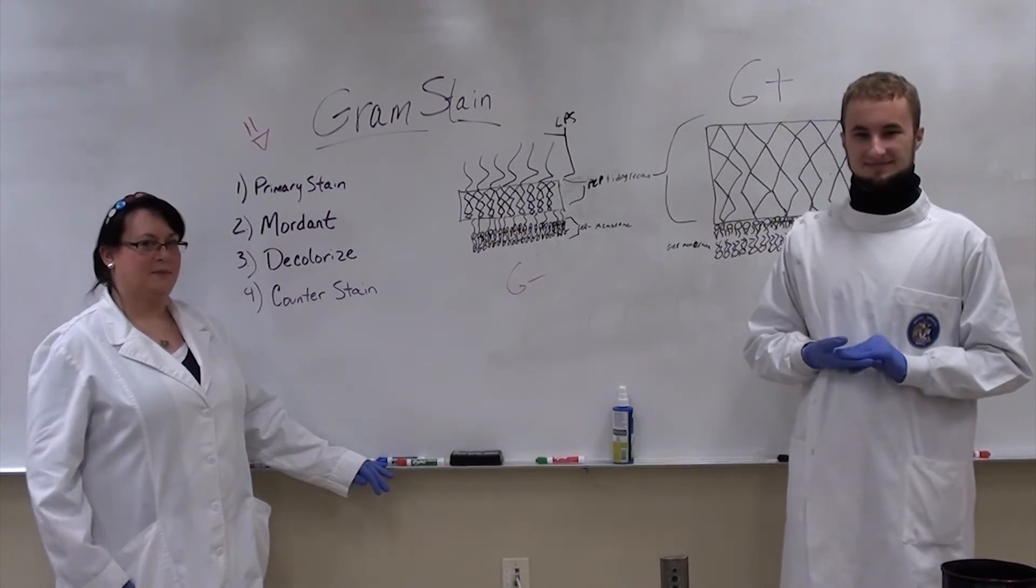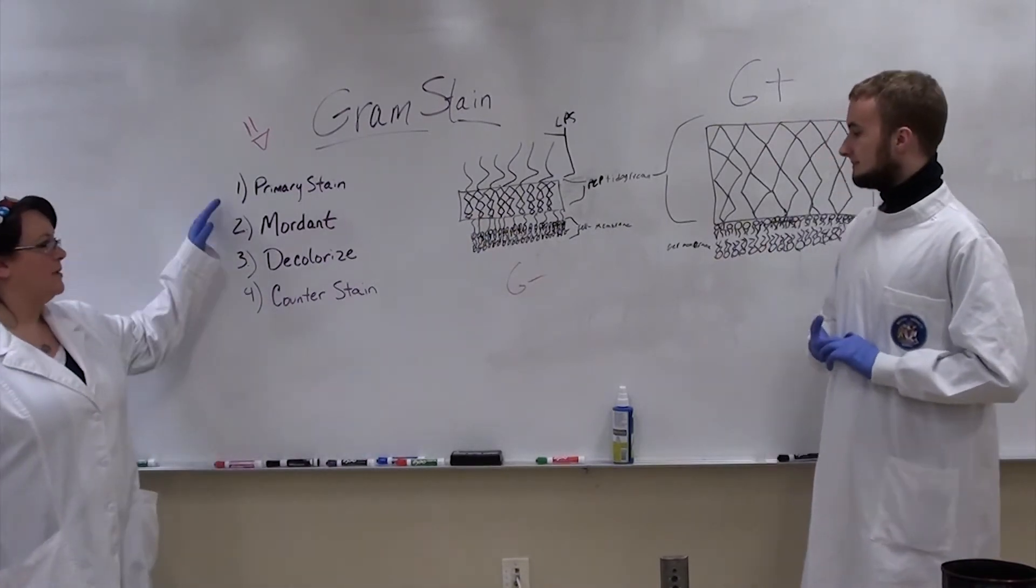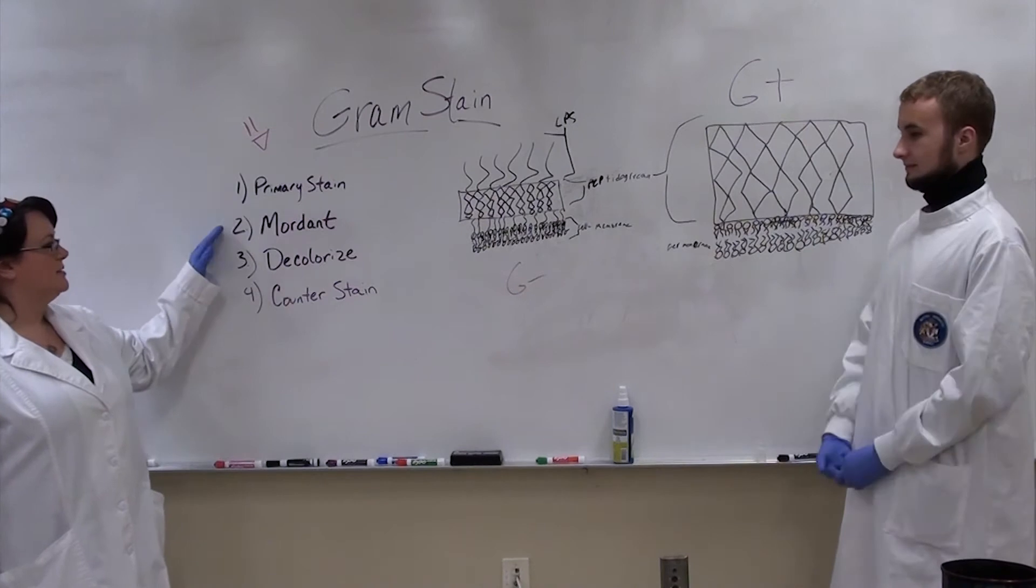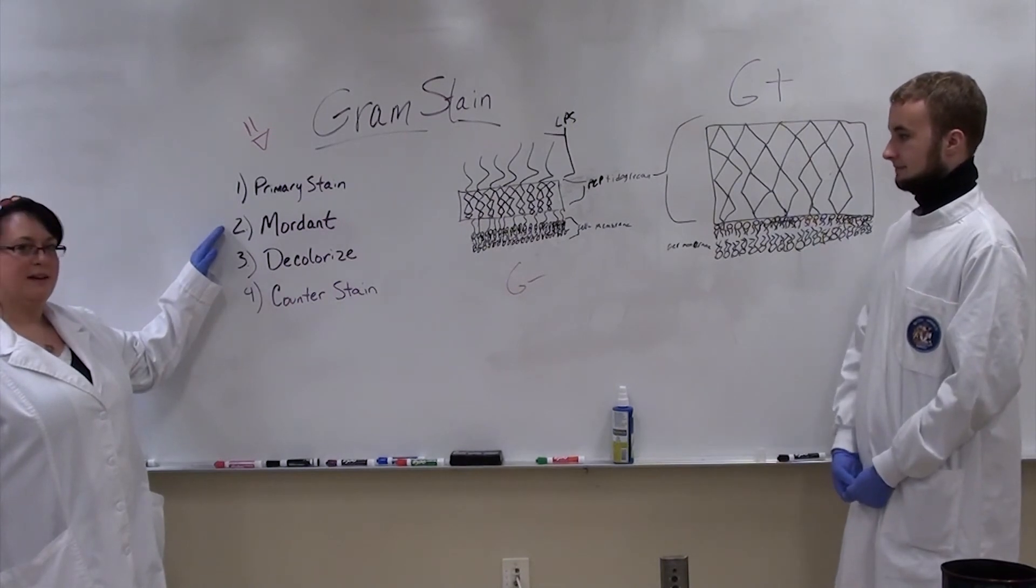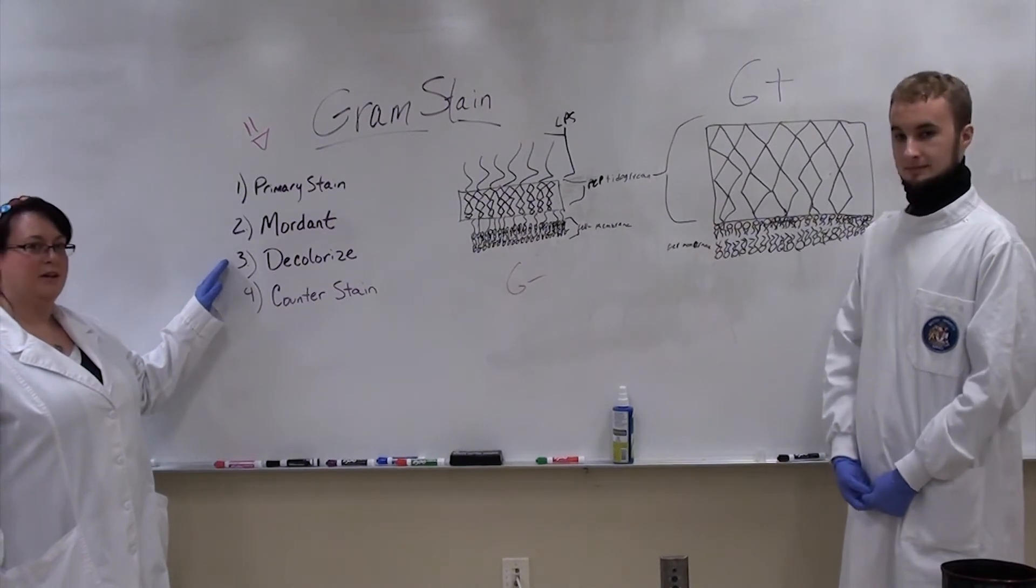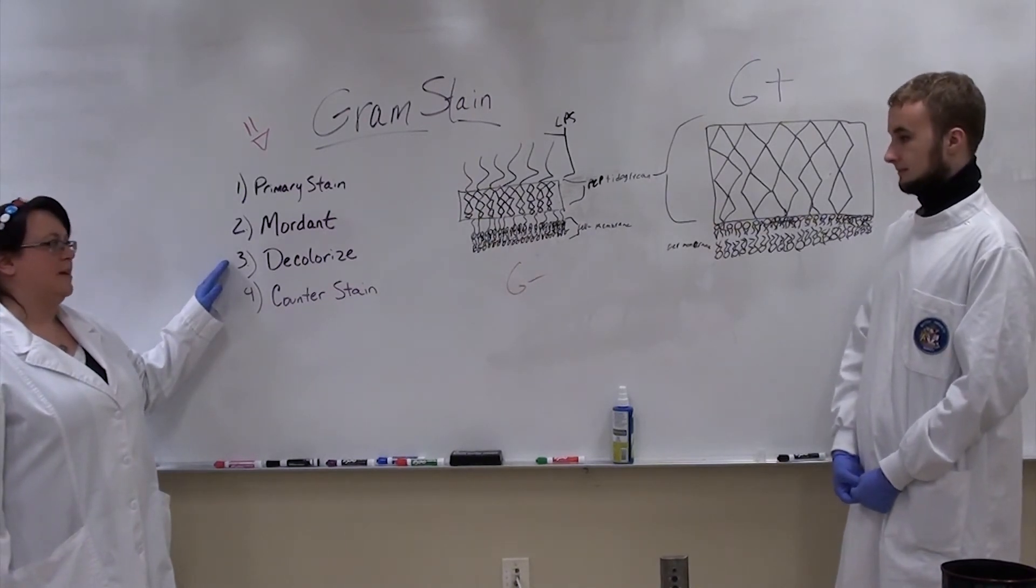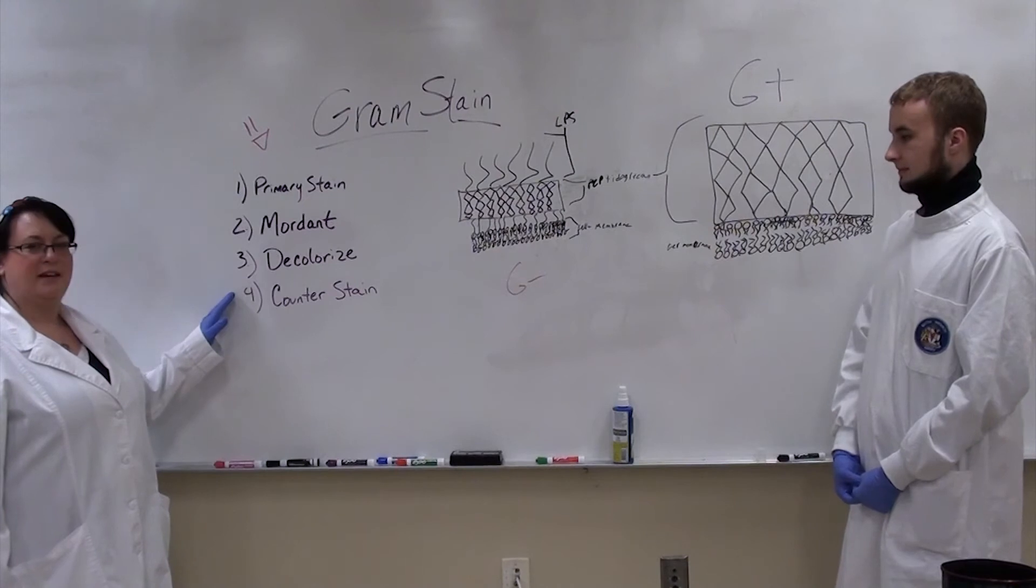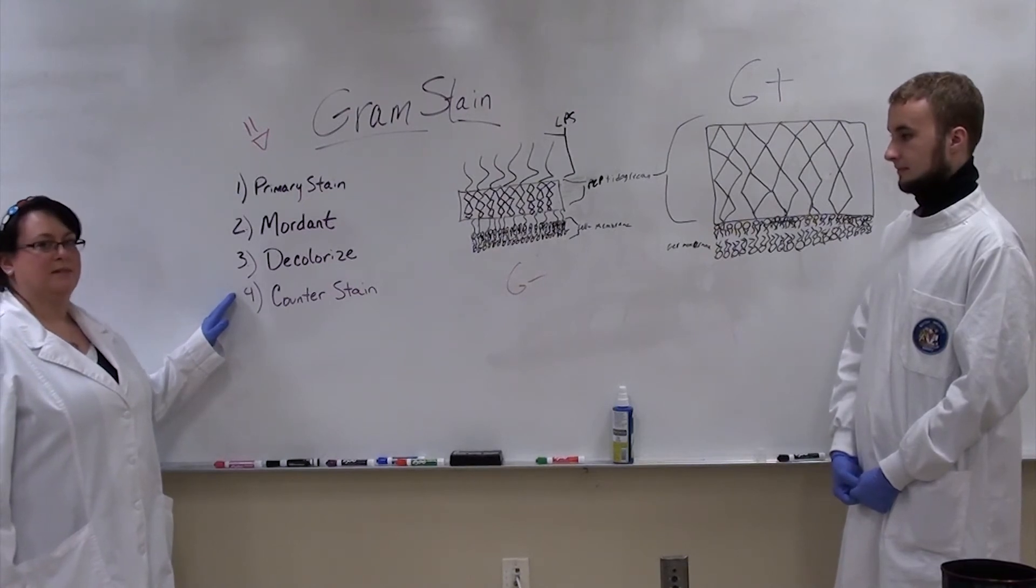So a gram stain is a four-step process. The first stain, a primary stain, crystal violet. The second stain, a mordant, grams iodine, helps to enhance crystal violet-iodine complexes. A decolorizing step to wash out any stain from a gram-negative organism and a counter stain to stain the gram-negative organism in a different color.